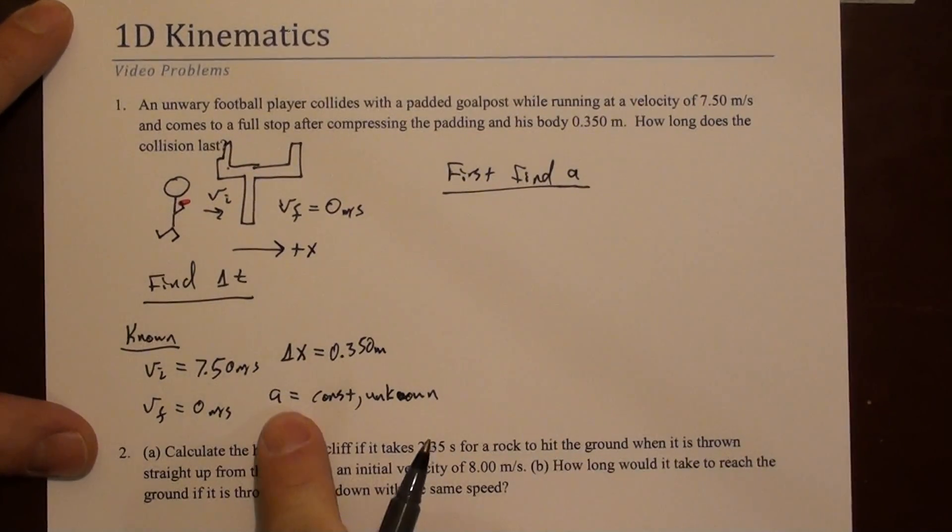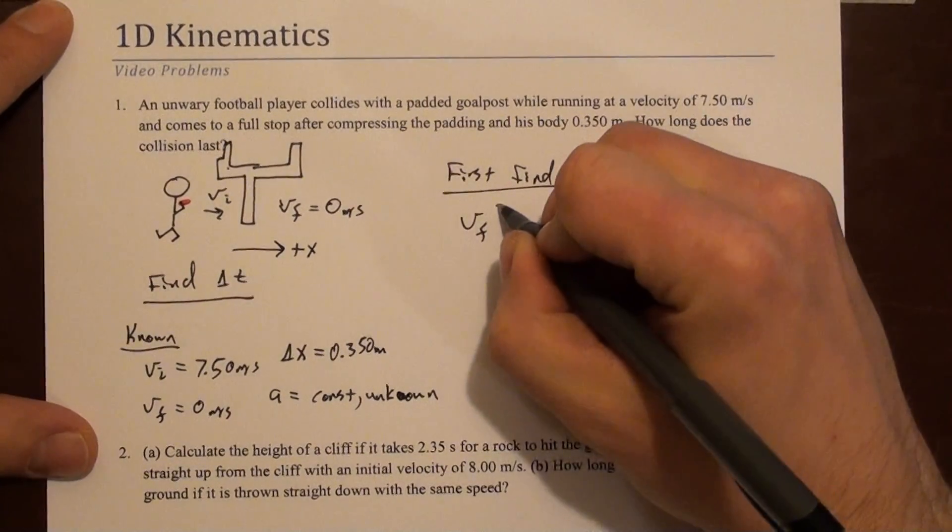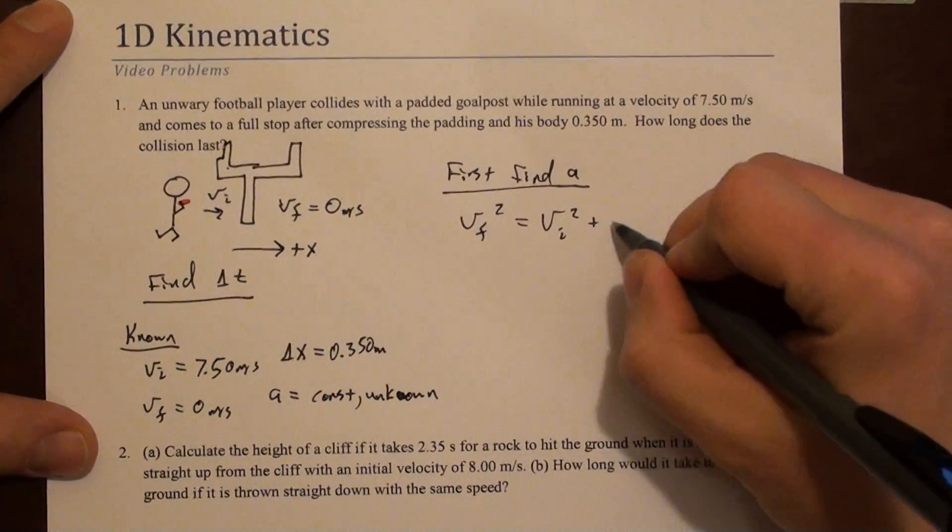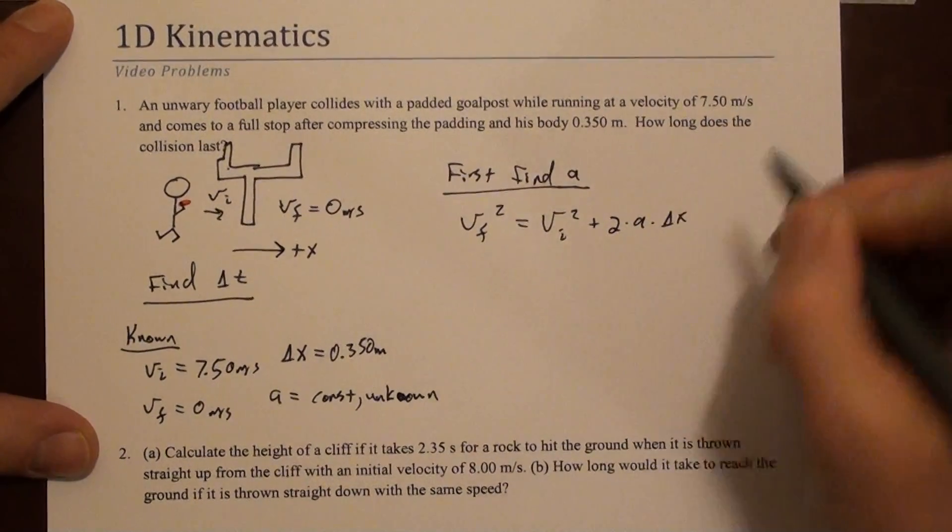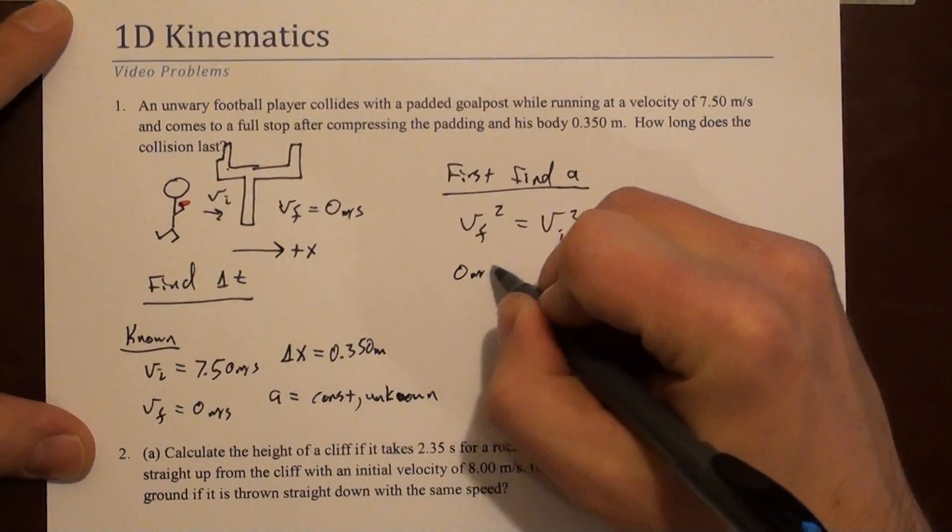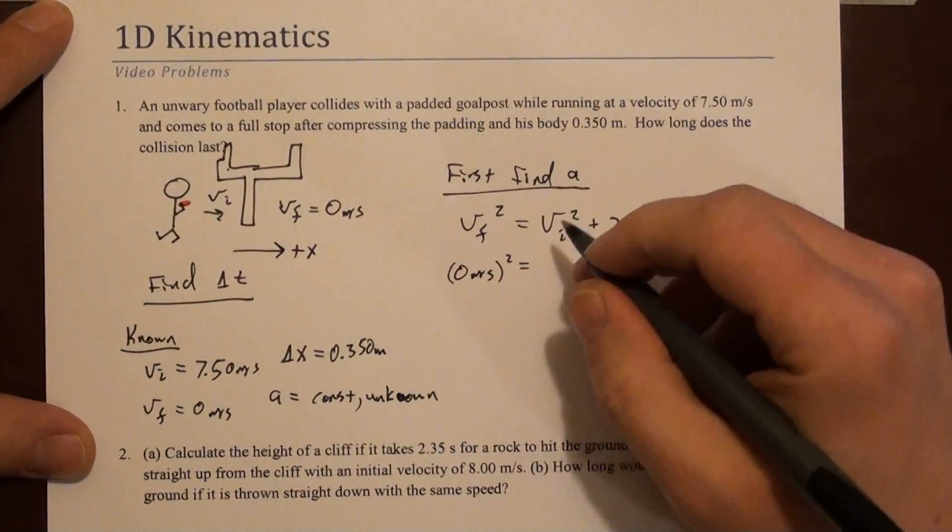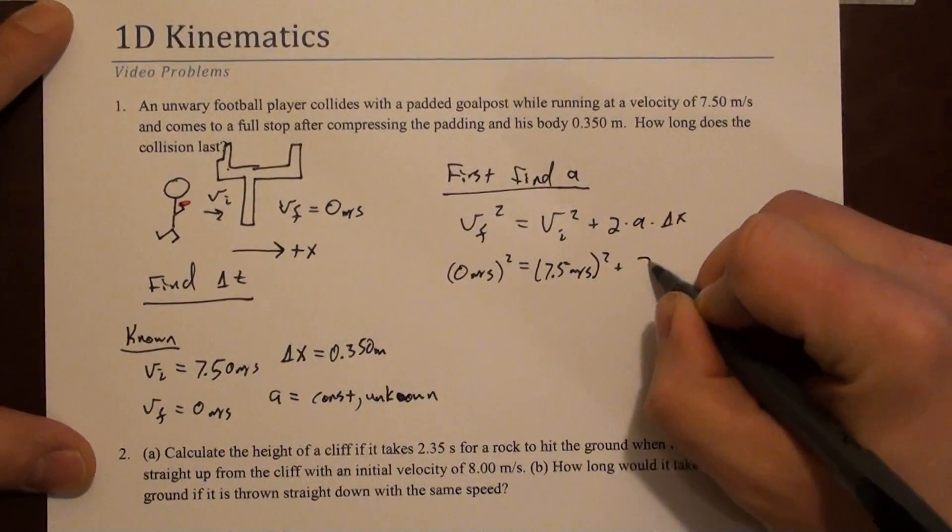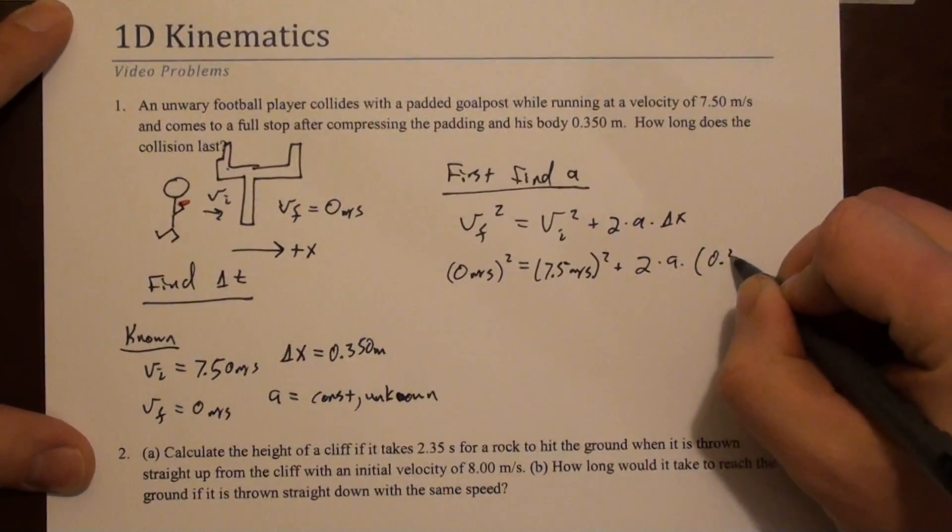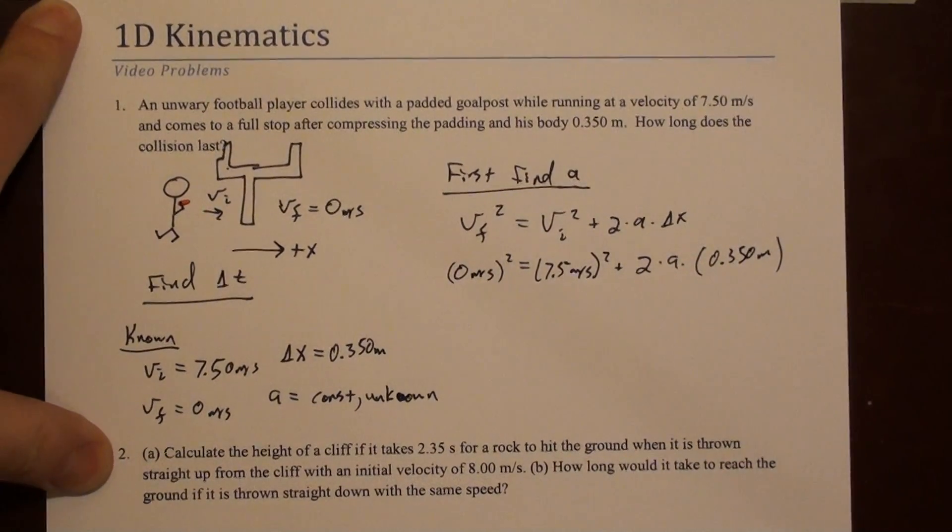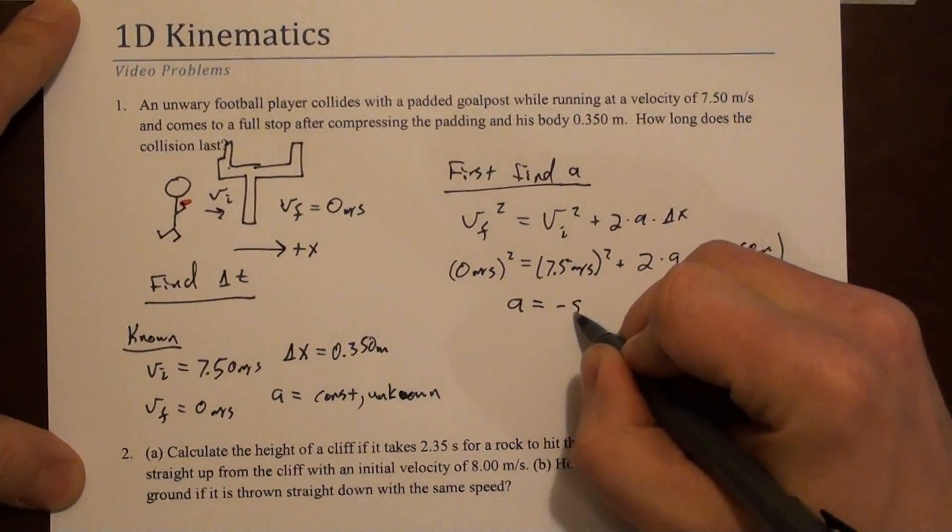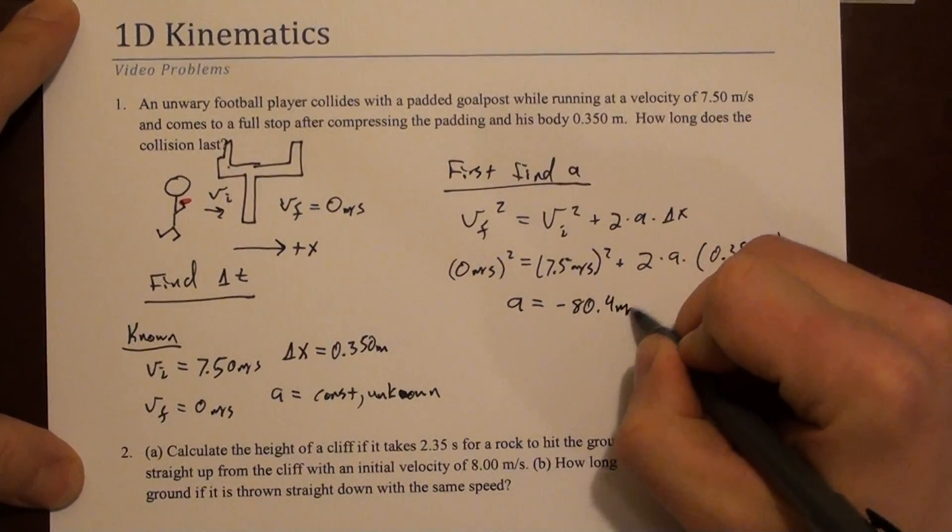We want to know a. We know v final, v initial, and delta x. So it looks like we can use the third equation I've listed. V final squared equals v initial squared plus 2a delta x. So plugging in, we have 0 meters per second squared equals 7.5 meters per second squared plus 2 times a times 0.350 meters. If you solve that for a, for acceleration, you get minus 80.4 meters per second squared.